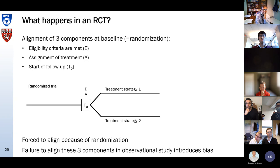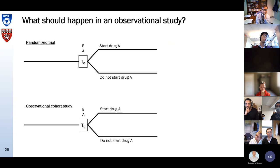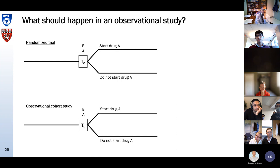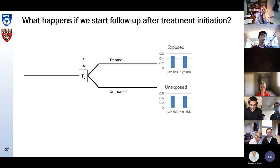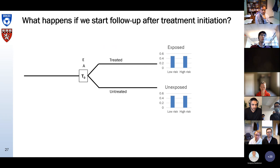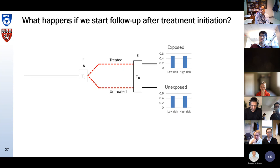If we do not align these three components, the observational study will introduce bias. What happens if we do not start follow-up at the same moment as treatment initiation, but start follow-up after treatment has been started? Consider what would happen if we really conducted a randomized trial but started our follow-up two years after randomization — throwing away all data in the first two years and making a new baseline at two years.